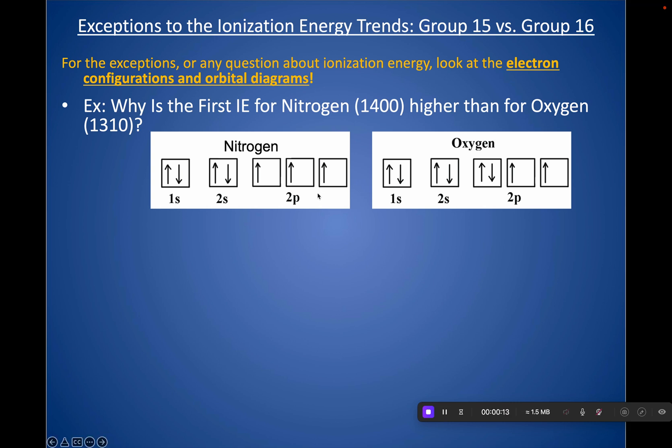You should have gotten that ionization energy should increase across a period. That's what we would expect as you add more protons. However, I'm telling you that a dip happens at oxygen's group. It happens with the whole group, actually, from going from group 15 to 16.